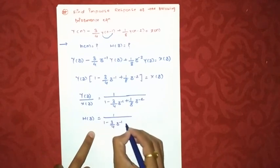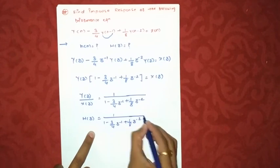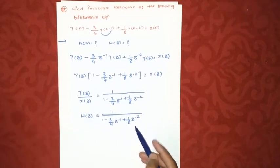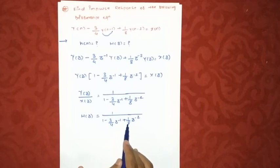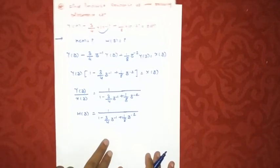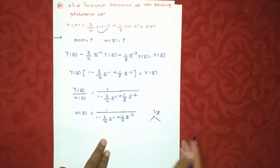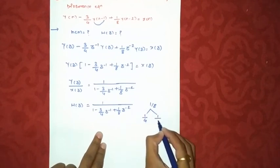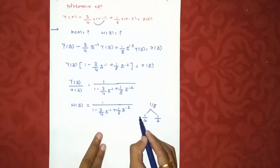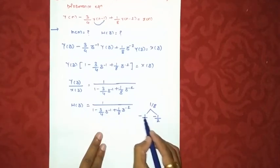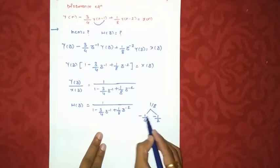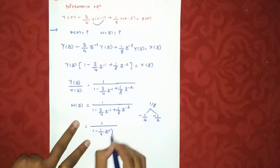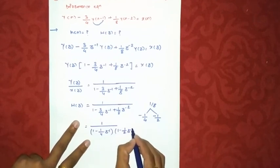Dividing Y(z) by X(z) gives the transfer function H(z) = 1 / [1 − (3/4)z⁻¹ + (1/8)z⁻²]. Since the denominator can be factorized, we apply partial fractions. The factor of 1/8 can be split as (1/4) and (1/2) with negative signs: 1/8 = (1/4)·(1/2), and their sum gives −3/4. So H(z) = 1 / [(1 − (1/4)z⁻¹)(1 − (1/2)z⁻¹)].